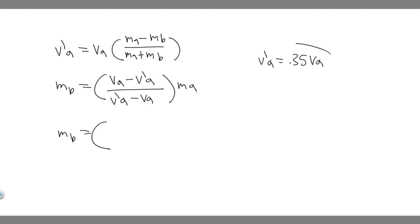What you want to keep in mind, though, is that v prime a is actually going to be negative. The reason is because it's rebounding—it's going in the opposite direction, going backwards. It's not going in the same direction, it's going opposite direction, so we have to make sure it's negative.